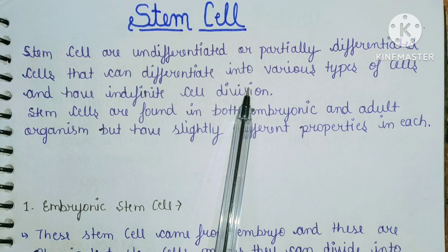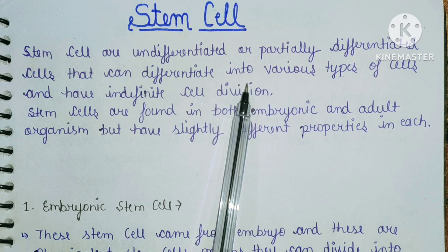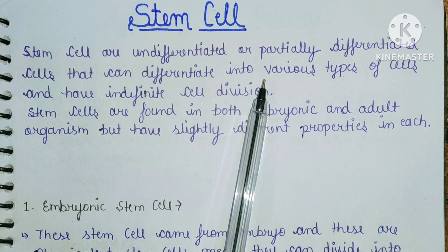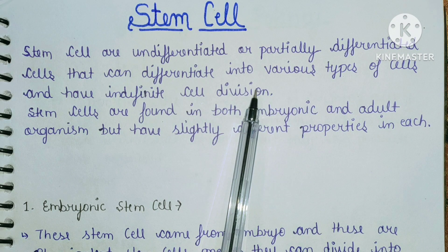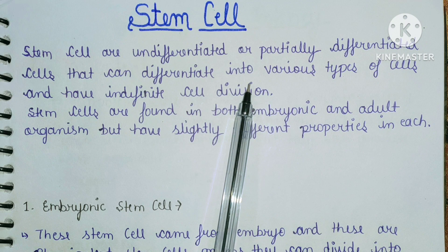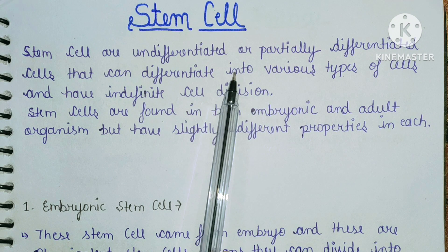They can be divided into any type of cell — kidney cells, brain cells, heart cells. They can be divided into any type of cell.